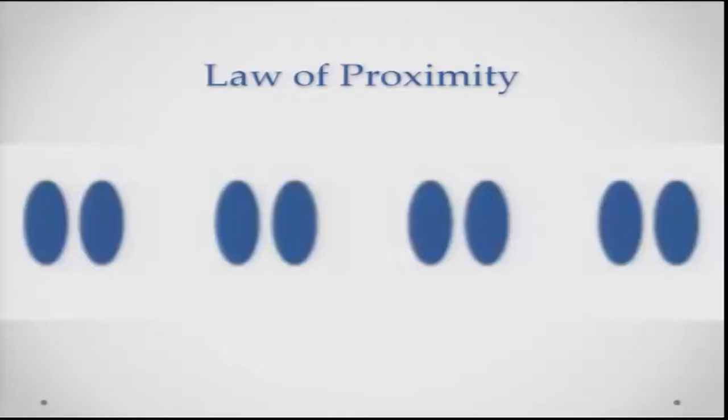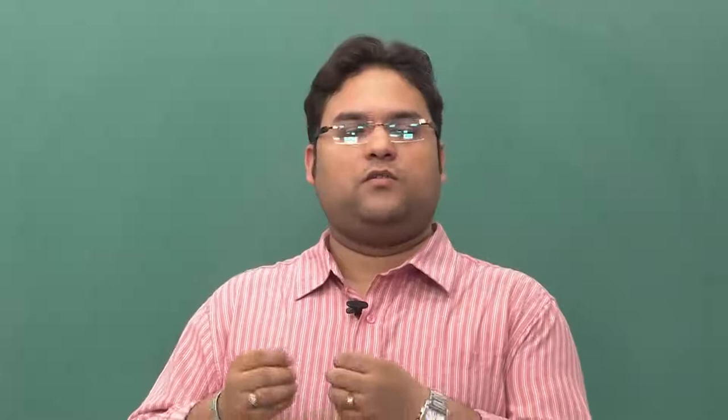Now, can you tell whether you are seeing 8 pebbles or 4 groups of 2 pebbles each? What is happening is you are already organizing the 2 pebbles which are close to each other. You are more likely to say that you are seeing 4 groups of pebbles rather than 8 individual pebbles. This is the law of proximity — it says that individual components put close together are organized as part of one object.